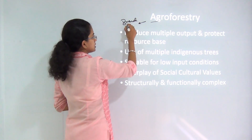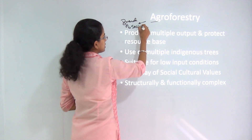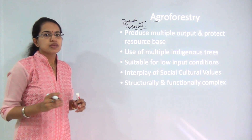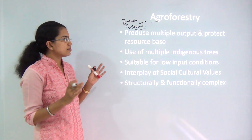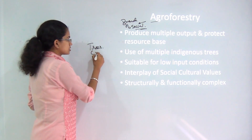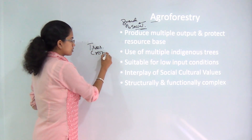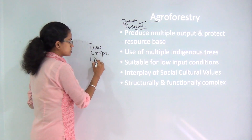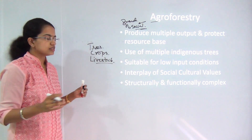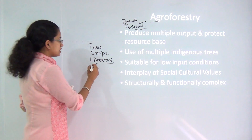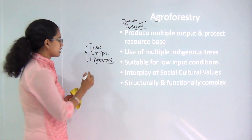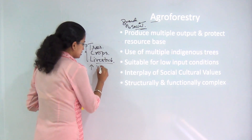Agroforestry is a branch of social forestry where we specifically deal with maintaining sustainable development including trees, crops, and livestock. The livestock includes all animals. You try to maintain a sustainable balance and increase your yield.